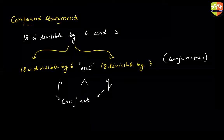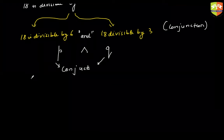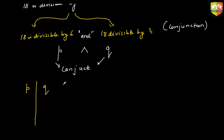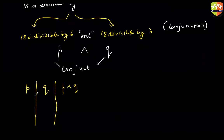Now, how does a truth table of AND look? What is a truth table? It is a tabulation of the outcome of a compound statement for different inputs of the component statements.